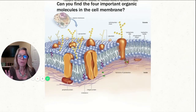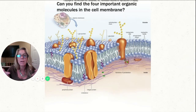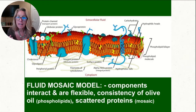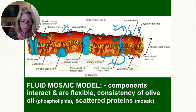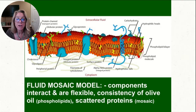The cell membrane is described by the fluid mosaic model. We use models to represent things — this is the fluid mosaic. The fluid part refers to how flexible those phospholipids are. The mosaic part refers to the scattering of those proteins amongst the phospholipids. On your notes, I have a picture for you. The fluid part is the phospholipid bilayer, with the consistency of olive oil, and the mosaic is the scattered proteins.